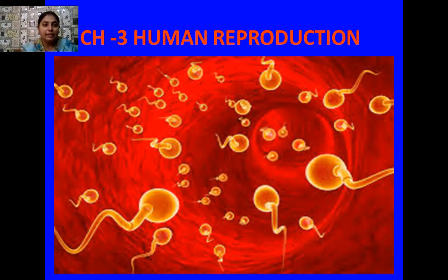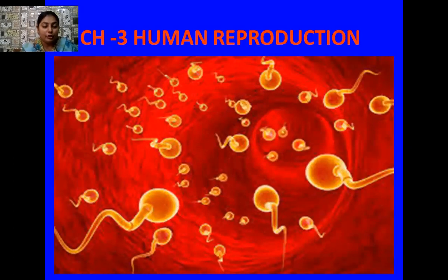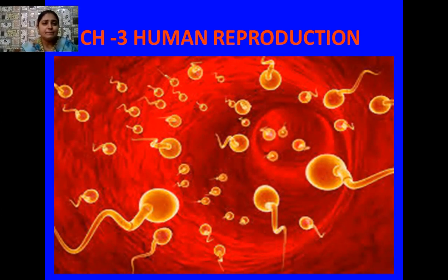We will also study in detail about the process of embryo development and various stages of embryo development. After the process of fertilization, a zygote is formed, and this zygote later undergoes many cleavage divisions which are actually mitotic divisions. As a result we can see the embryo at various stages of its development. We will also study different types of embryo stages such as gastrula, blastula, and blastocyst. We will study in detail about implantation, pregnancy, childbirth, and lactation.